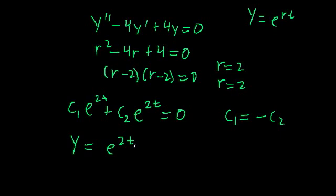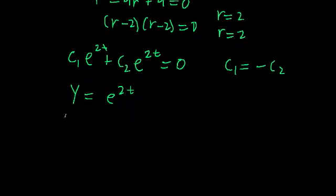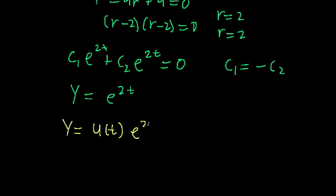What we're going to do is use a technique called the method of reduction of order. Essentially, what that method says is we're going to assume the second solution is a modification of the first solution. So we're going to assume the second solution has the form u as a function of t times e to the 2t.